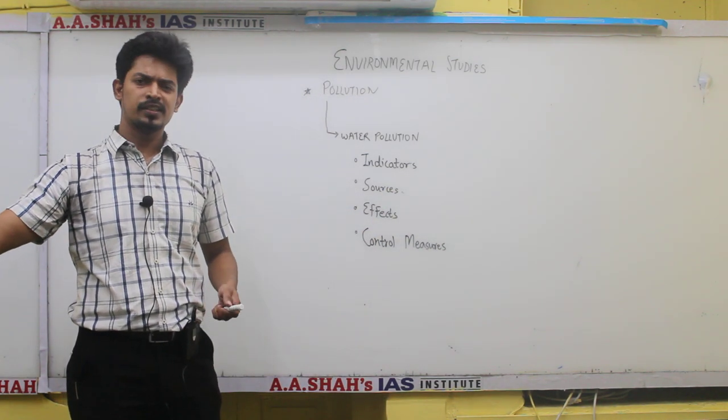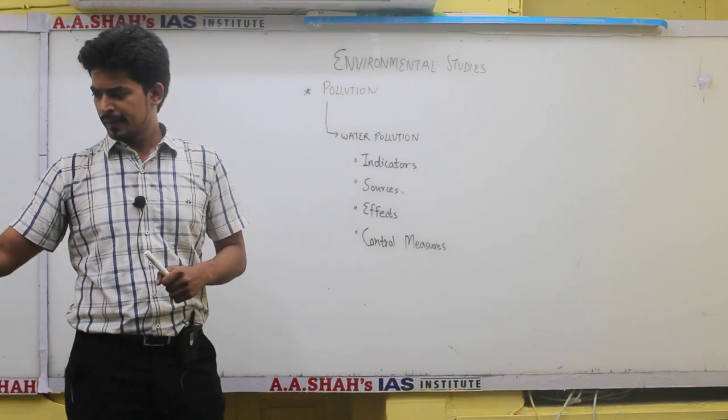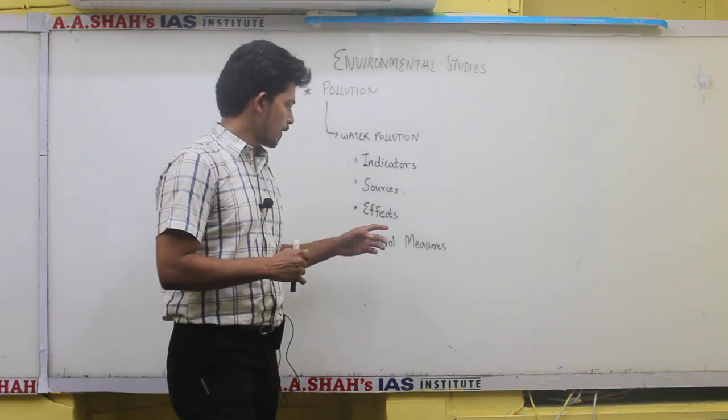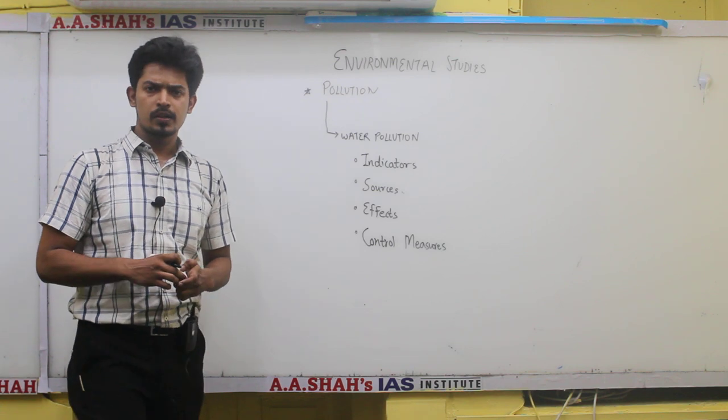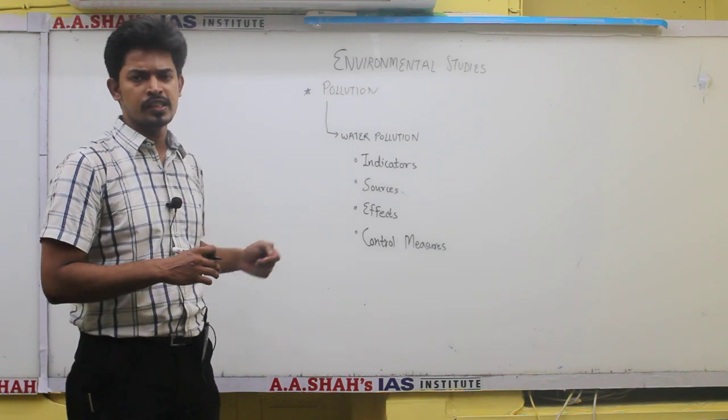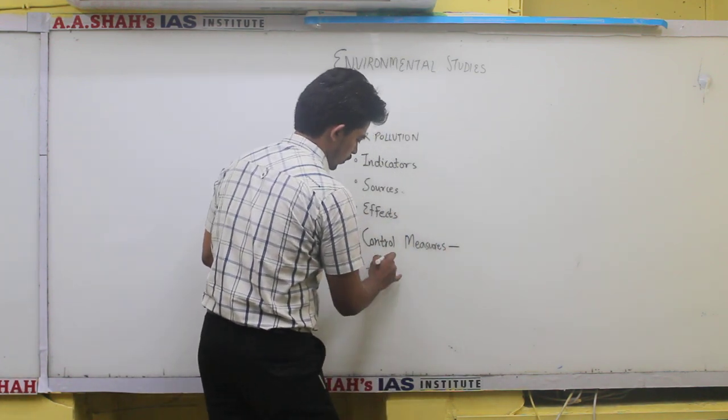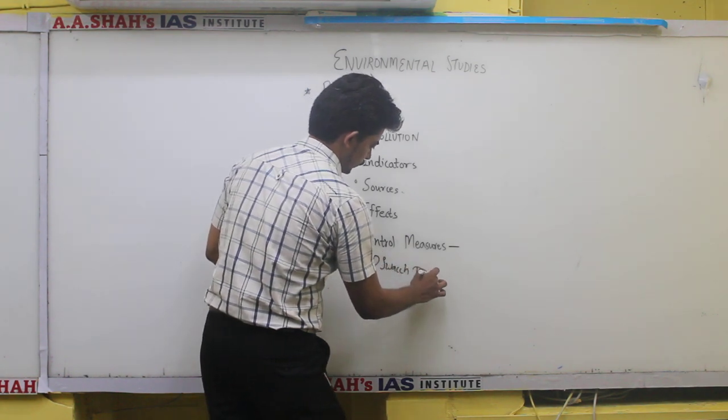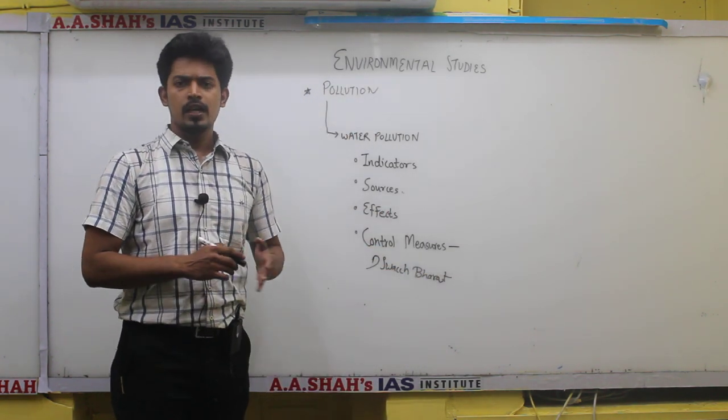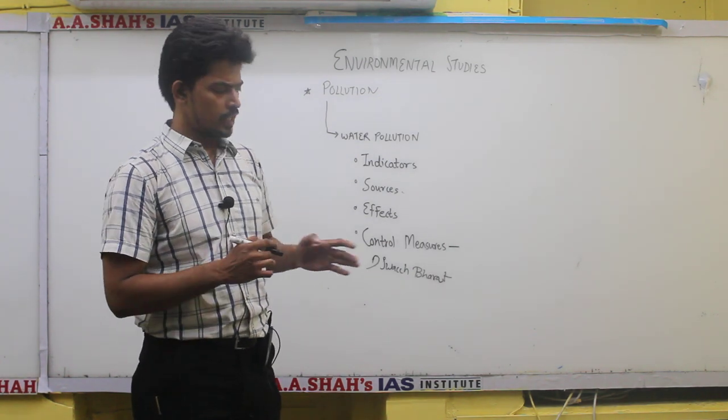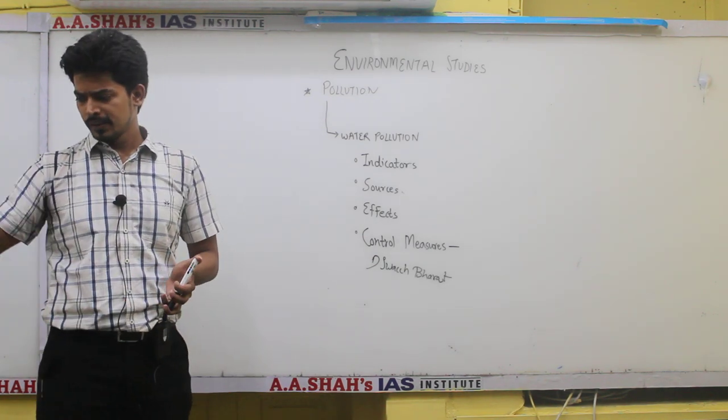Apart from all these things, there are many other problems and effects of water contamination. But what control measures are the government or local bodies taking to reduce these effects? On national scale, there are many control measures. The first and most important one is Swachh Bharat, then the Namami Ganga program. All these programs have the basic aim to control water pollution, to stop sewage or drainage water into the drinking water sources.